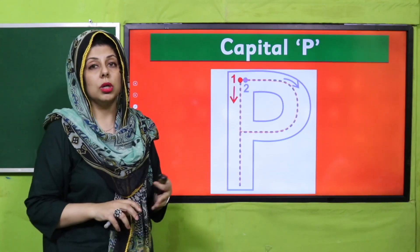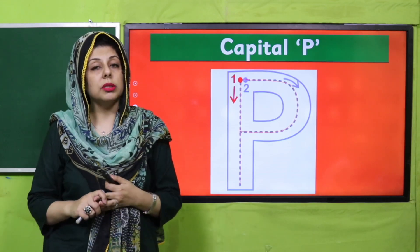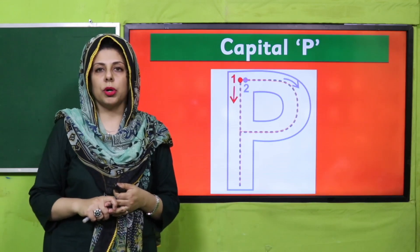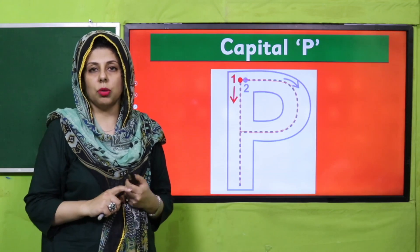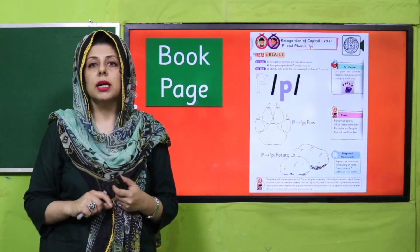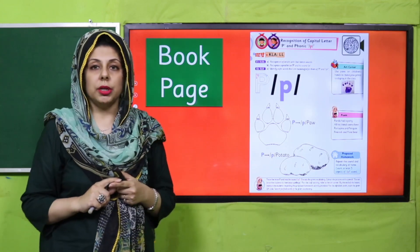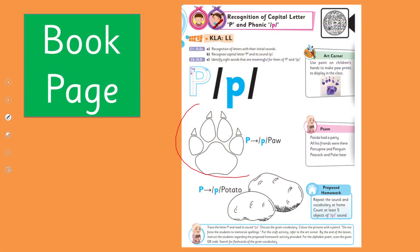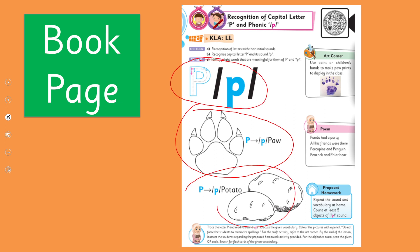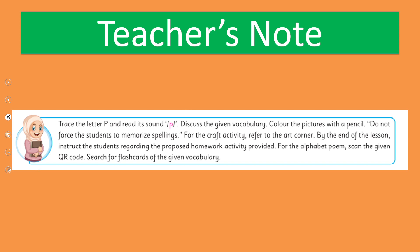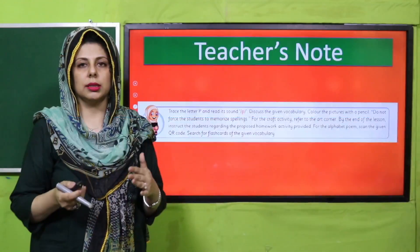Ho sakta hai is sound ka jo talluq hai aapke naam se bhi ho. Toh idhar aapne naam ko pukar ke dekhein ke kiya is mein ye wali sound hai, ye letter ki awaz hai. Teachers, aaj jo book ka page hai, us ke upar hai kuch vocabulary, picture ke saath, aaj ke letter ka face, us ki sound, aur us ke saath eek chhoti si poem, eek art corner activity, aur kuch home task. Usi pattern ko continue karenge aur aage lesson ko le ke chalenge.